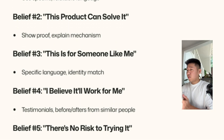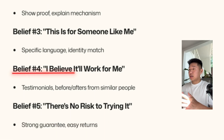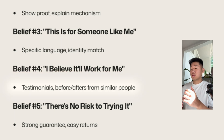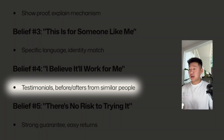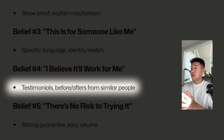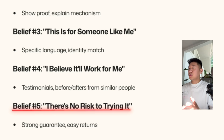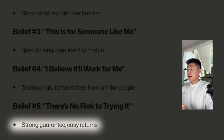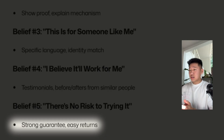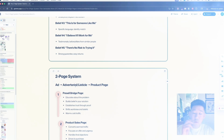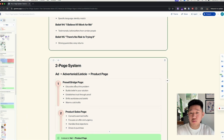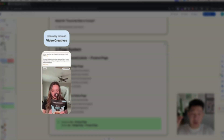Belief three: this is for someone like me — match the identity of who you're speaking to using specific language. Belief four: it will work for me — use social proof and trust factors like testimonials and before-and-afters from similar people. Belief five: there's no risk in trying it — solve this with strong guarantees, lowering friction, reducing overall risk, and providing easy returns.